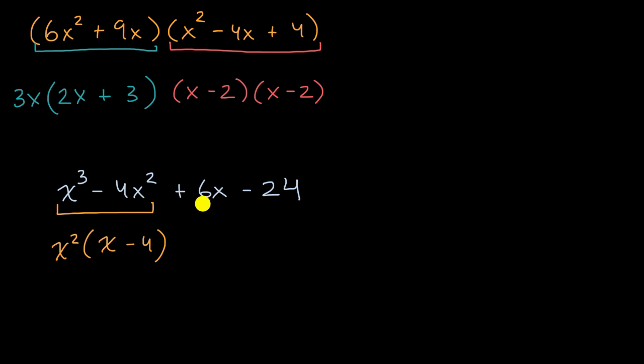And what about these second two terms? Is there a common factor between 6x and -24? Yeah, they're both divisible by six. So let's factor out a six here. So plus 6(x - 4).